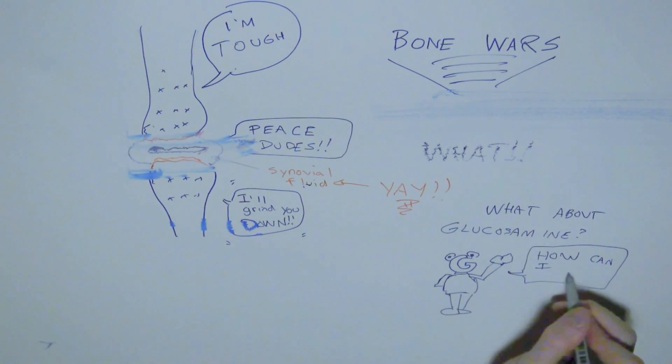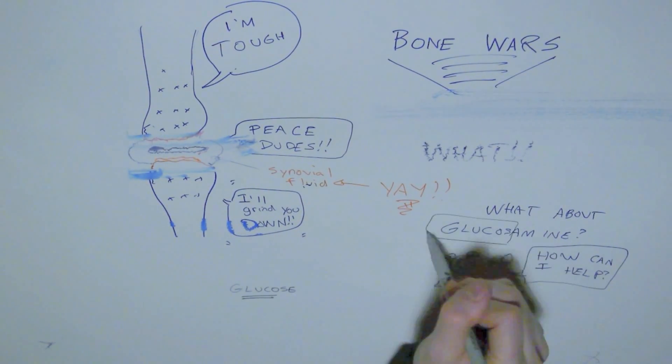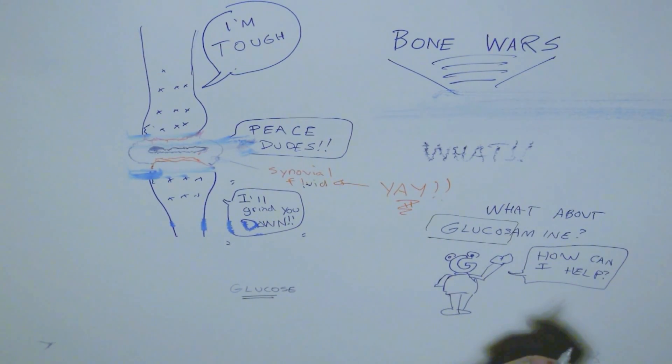It helps in creating that mucous membrane, which is in the synovial fluid, and in the joints surrounding the tissue. It makes it thick and elastic, and gives it more cushioning ability.